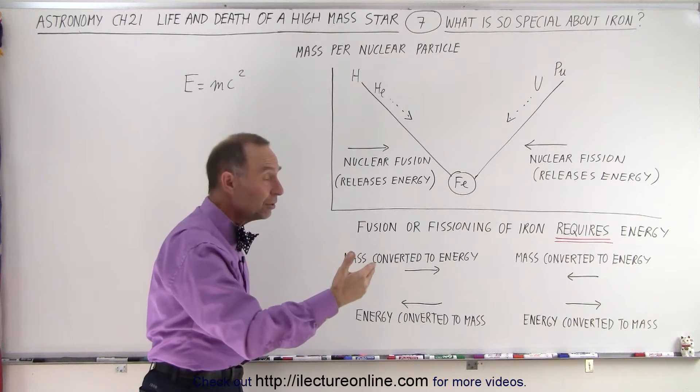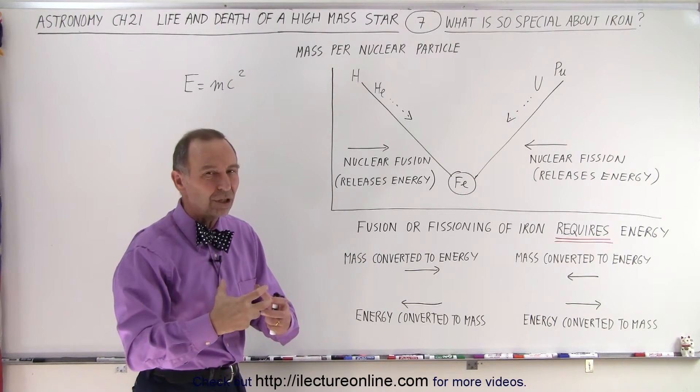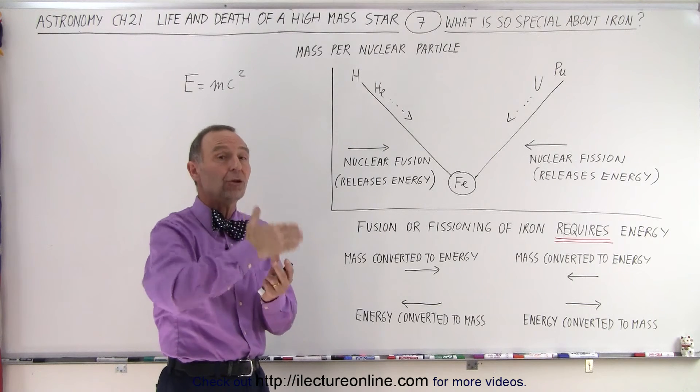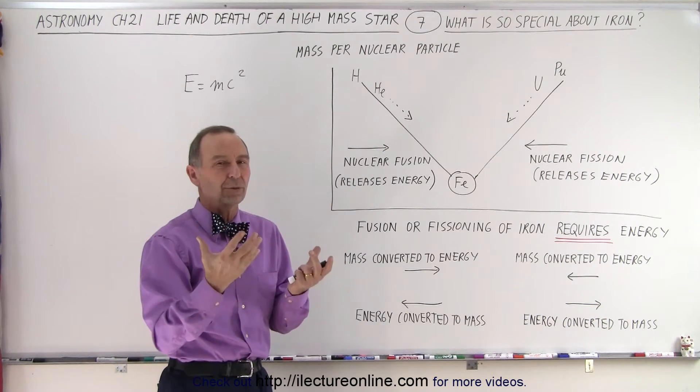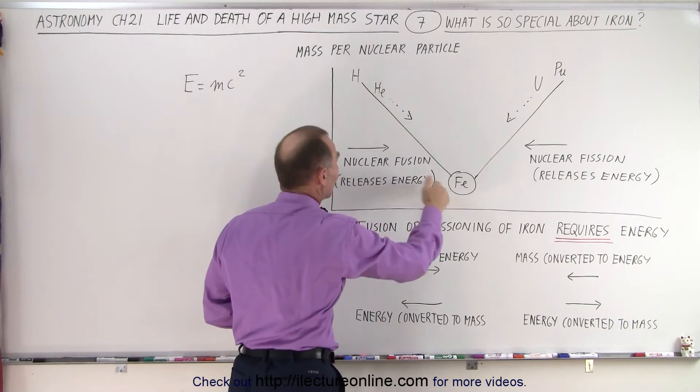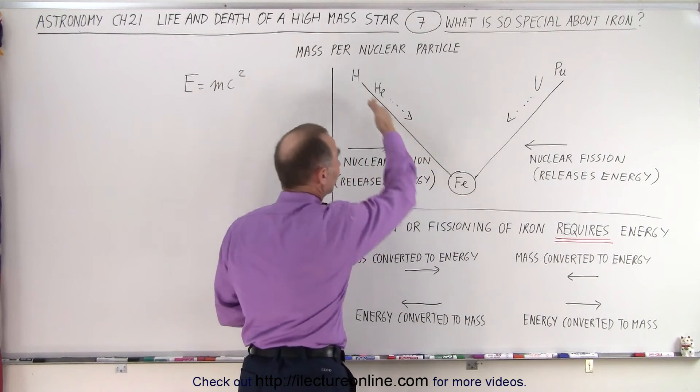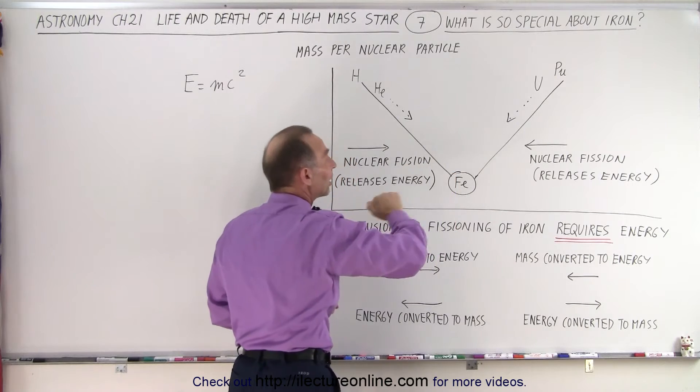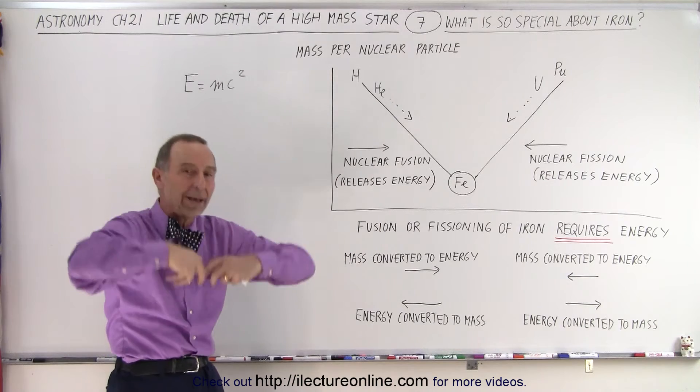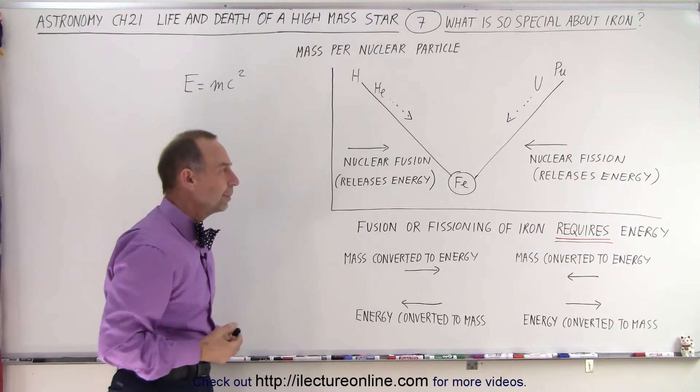So trying to fuse iron into the next element would take energy, not provide energy. So that means that from an endothermic process it becomes an exothermic process—or in this case I guess when we go from here to here we have what we call an exothermic process because we're releasing energy. Then when we try to go further it becomes the endothermic process; it tries to grab energy in order to get to the next element.